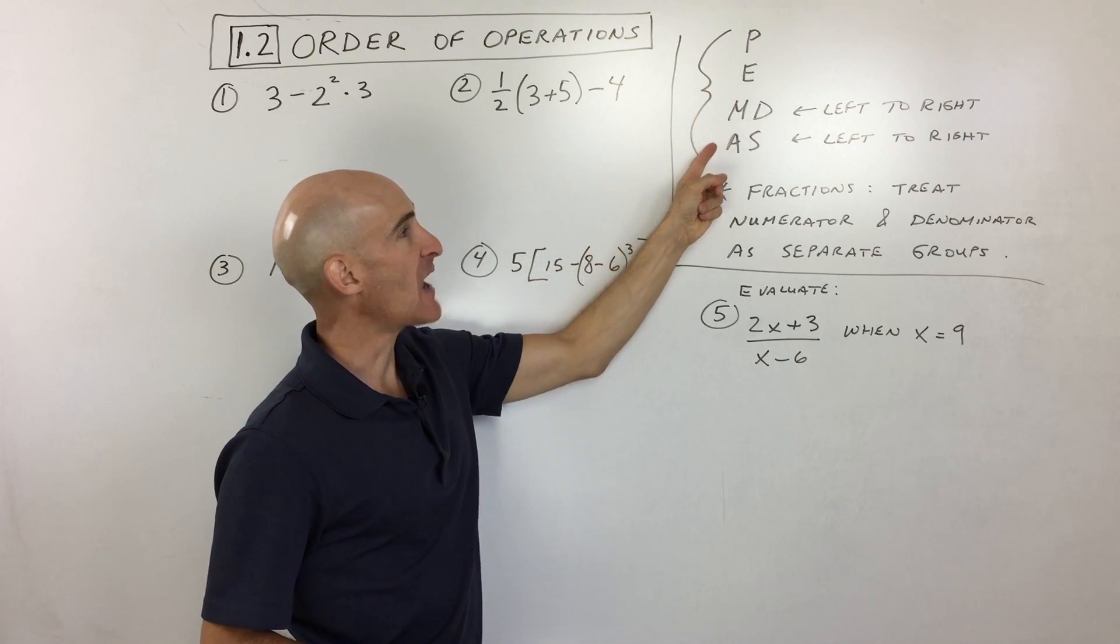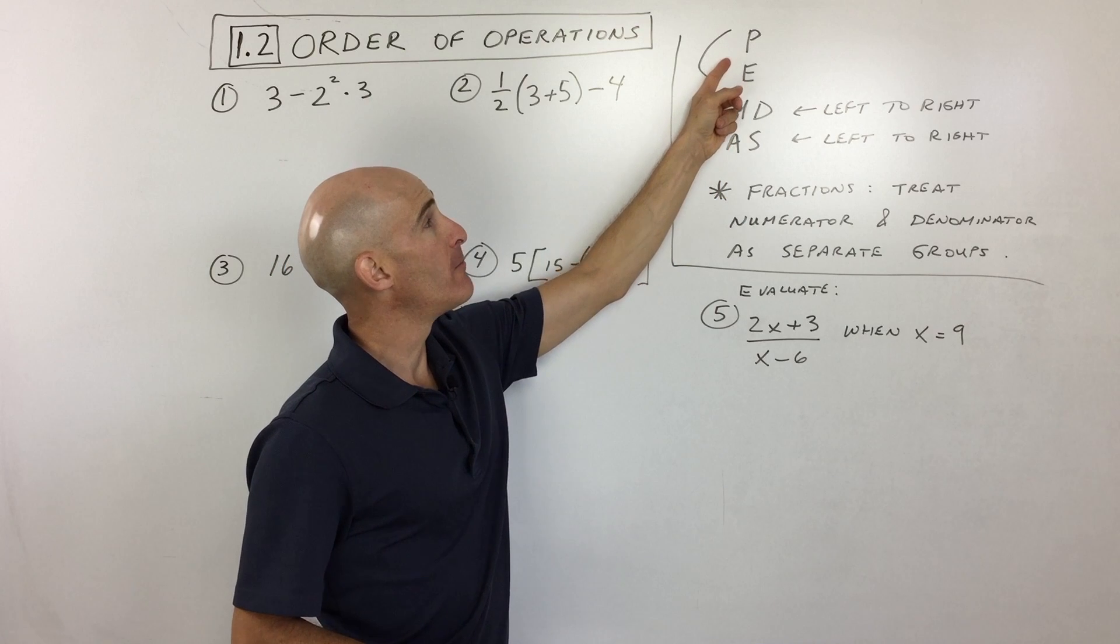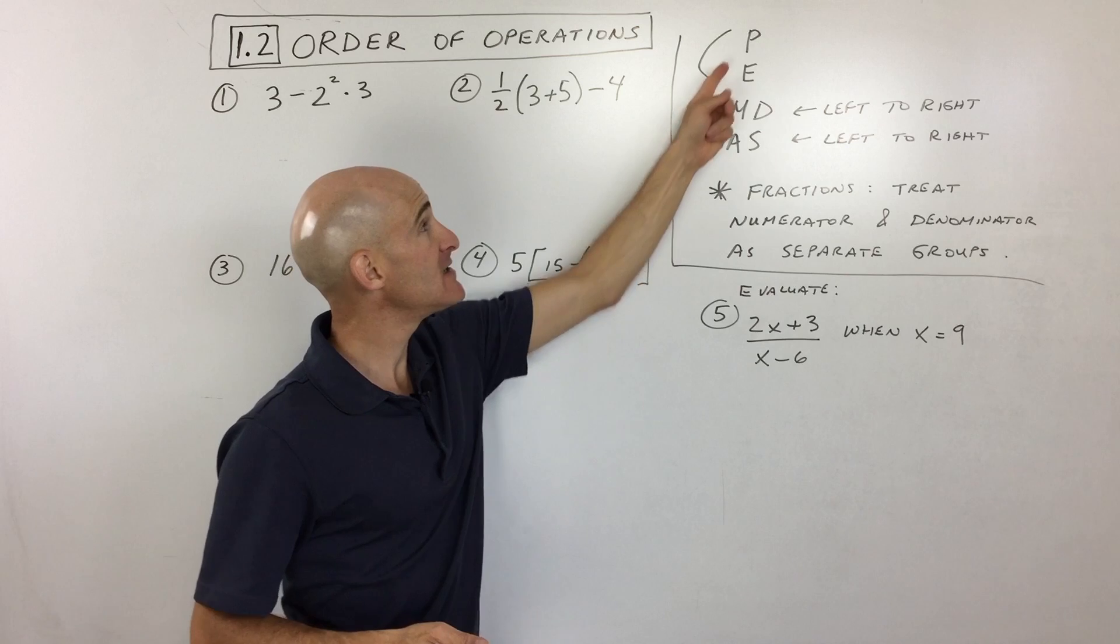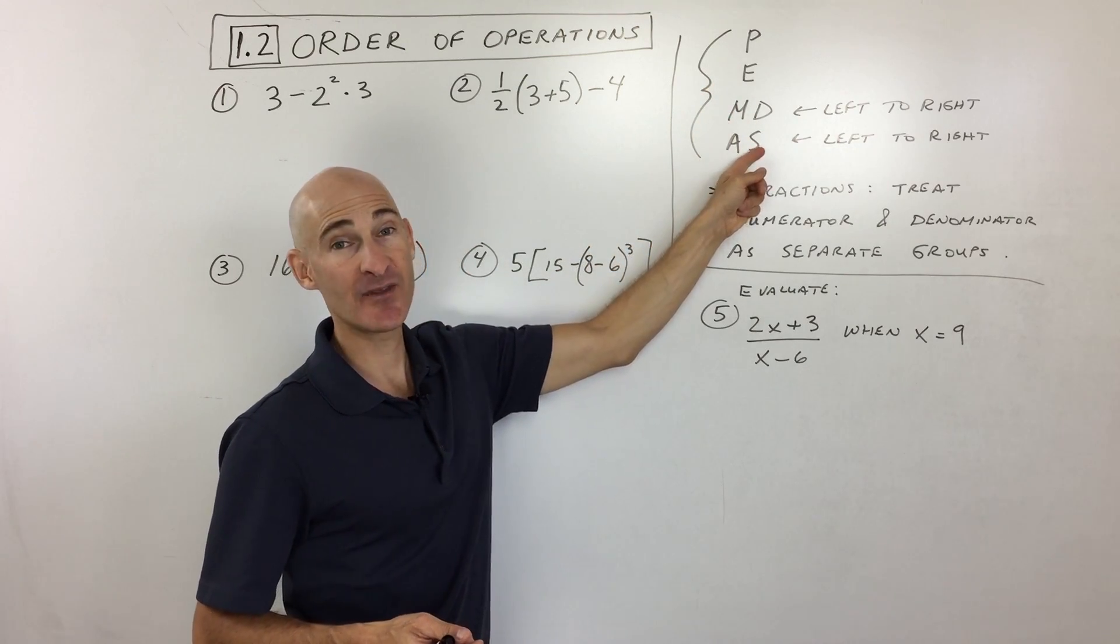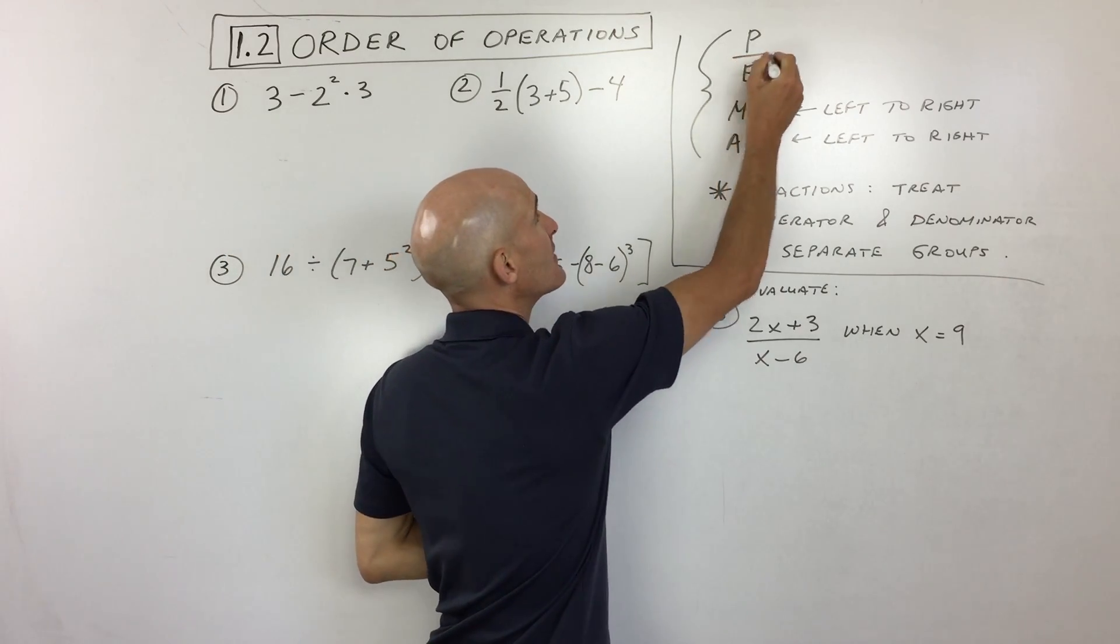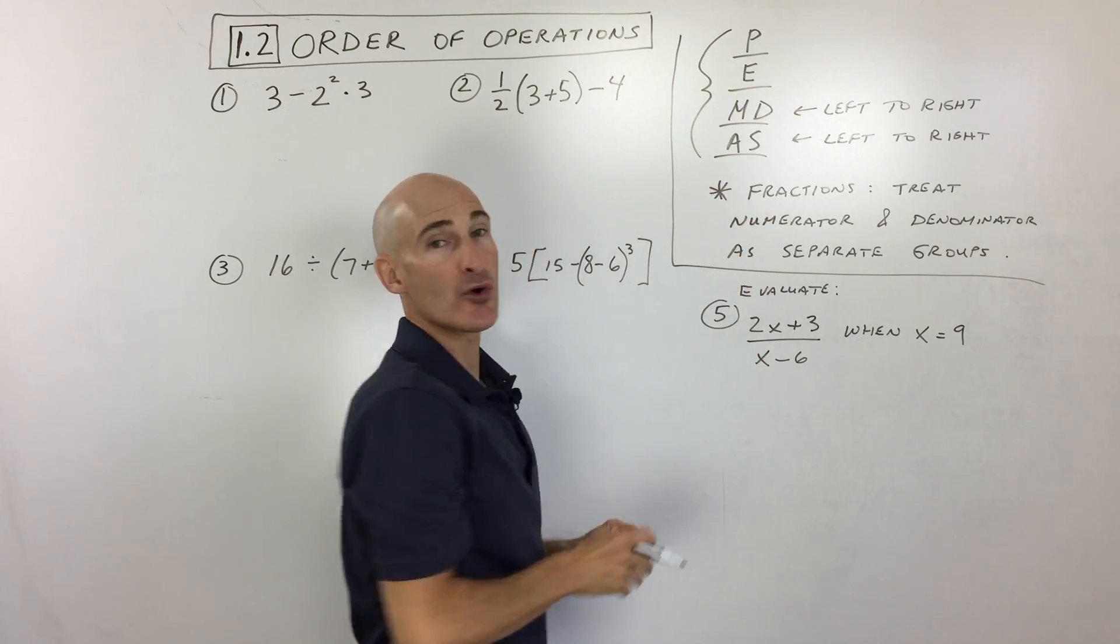It's an order of importance or a hierarchy. We usually remember this by the acronym PEMDAS. A lot of times students learn please excuse my dear Aunt Sally. But I like to think of it as just remembering PEMDAS and thinking of it as four levels of importance.